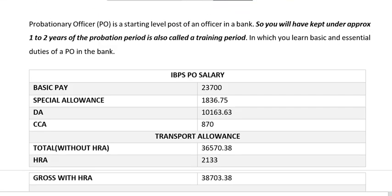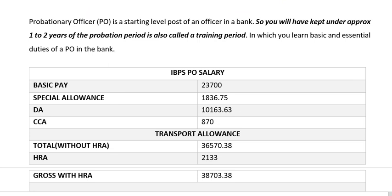In the IBPS PO post, if an aspirant is selected, then for the first 1-2 years, there will be a probation period, which will be a training period. In this training period, you will learn basic and essential duties in your respective banks. And after that, you will have a screening test, and after that, your growth will be decided on it.